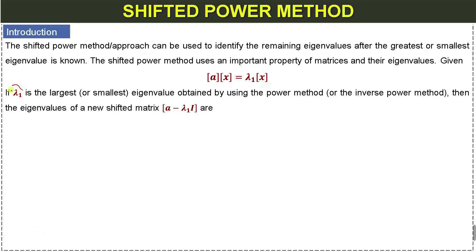If lambda_1 is the smallest or largest eigenvalue obtained by using the power method or inverse power method — which we have already studied, with links provided in the video description along with MATLAB code for both methods — then the eigenvalues of the new shifted matrix R can be determined.